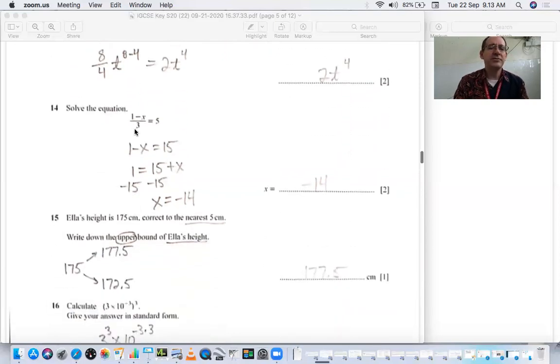Solve the equation. Just multiply the other side by 3 to get rid of your fraction. 1 minus x equals 15. Add the x to the other side. Subtract 15 to the other side. X equals negative 14.